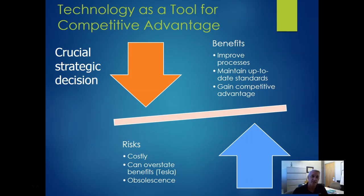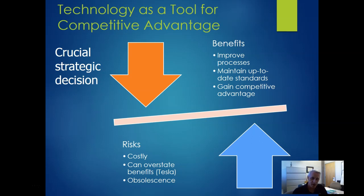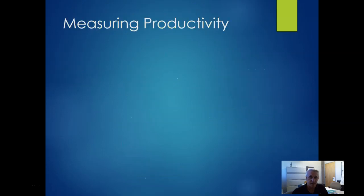We use technology as a tool to gain or keep competitive advantage, but there are strategic risks. Benefits include improving processes, maintaining up-to-date standards, and gaining competitive advantages. Risks include choosing the wrong technology — backing the wrong horse at great cost — overstating benefits, and obsolescence. For example, Tesla tried to over-automate early on and found that some processes actually needed the human touch. You can spend heavily on automation only to have it become obsolete in just a few years.